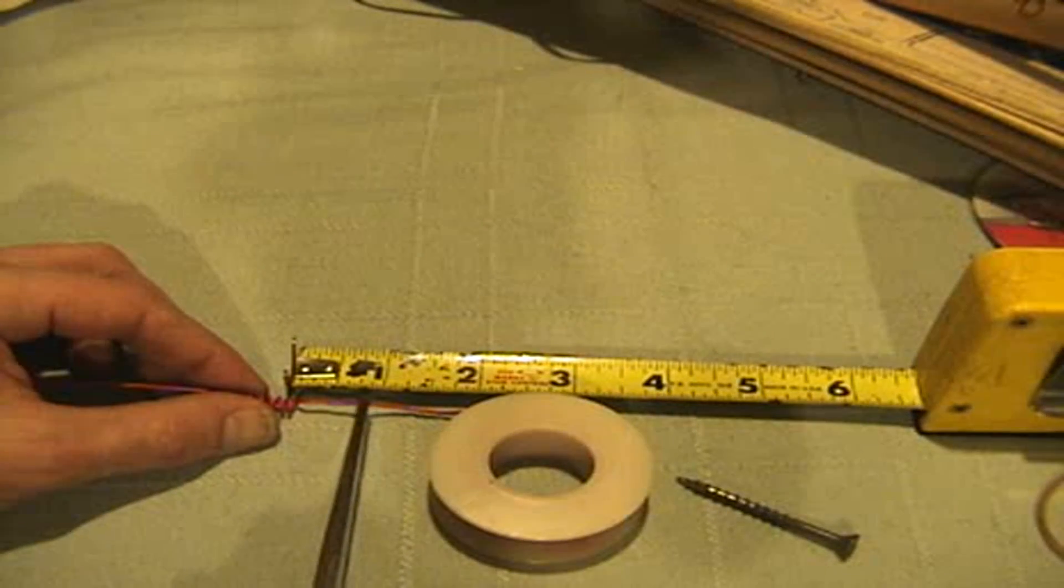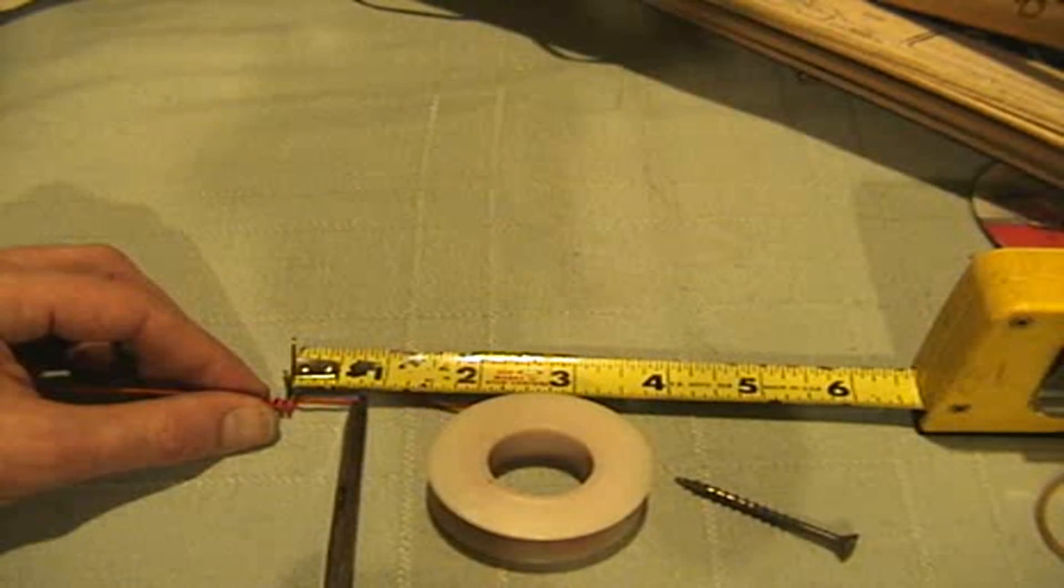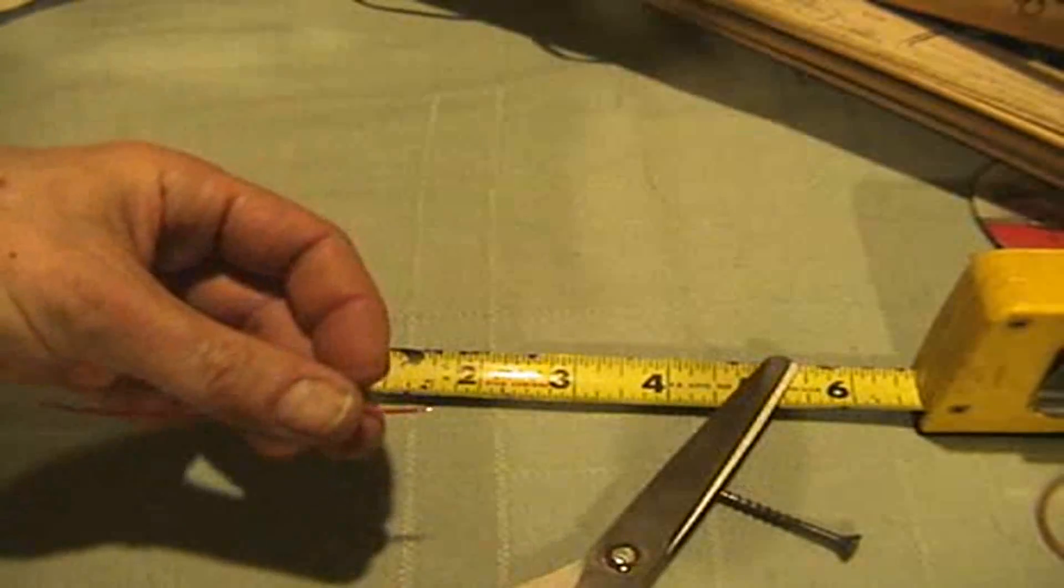Measure off another three-quarters of an inch and clip the wire. Then strip an eighth of an inch off the end.